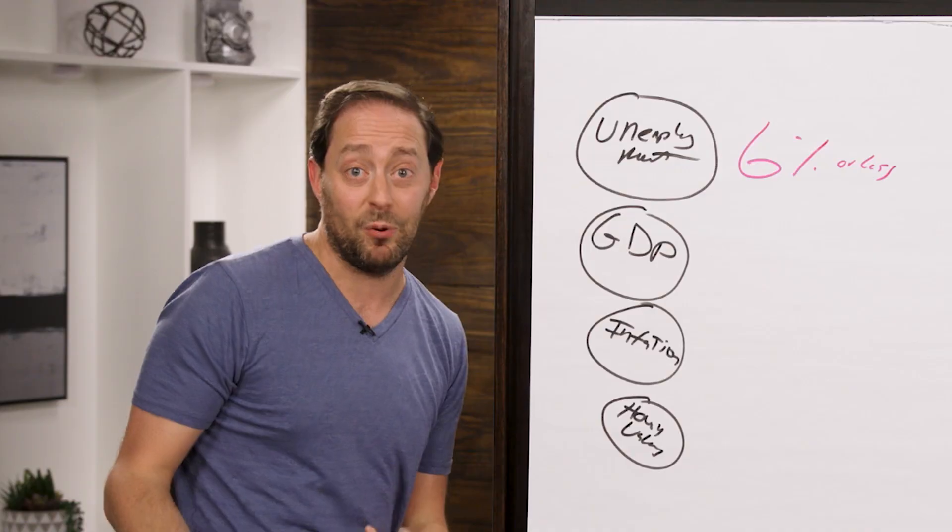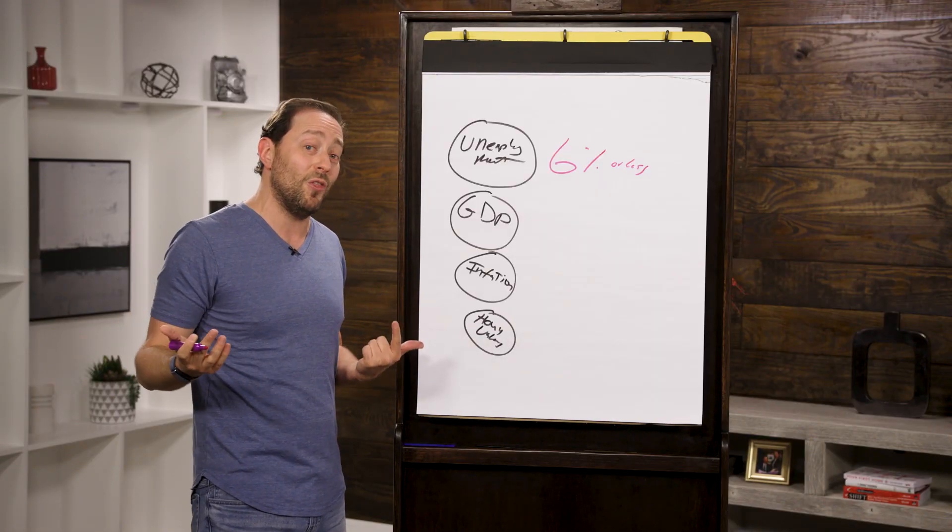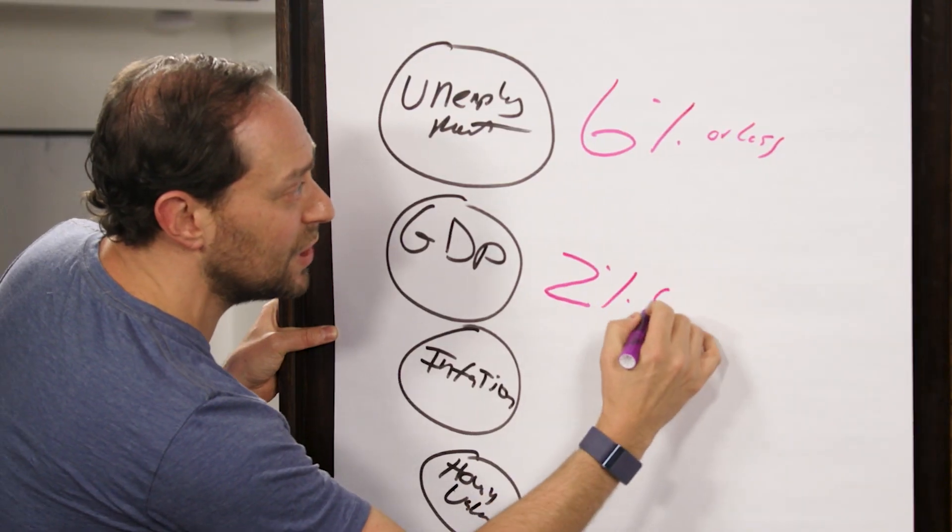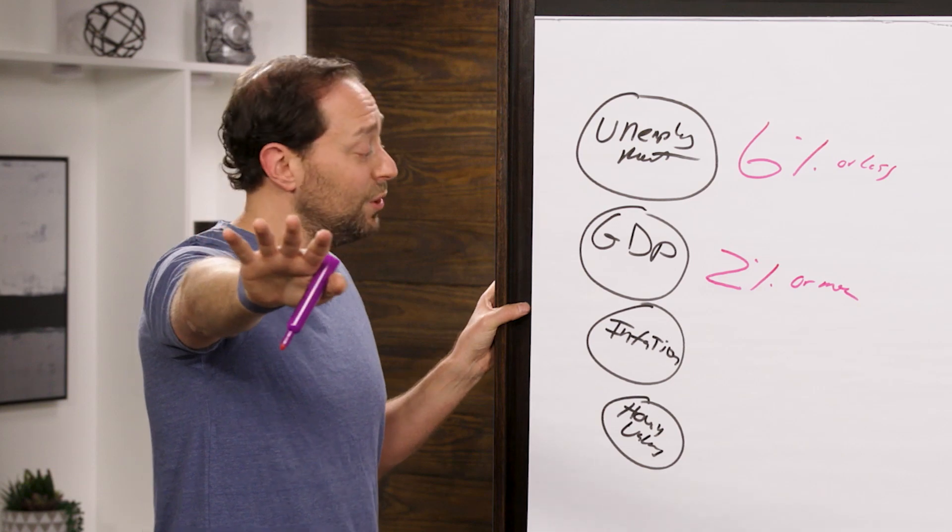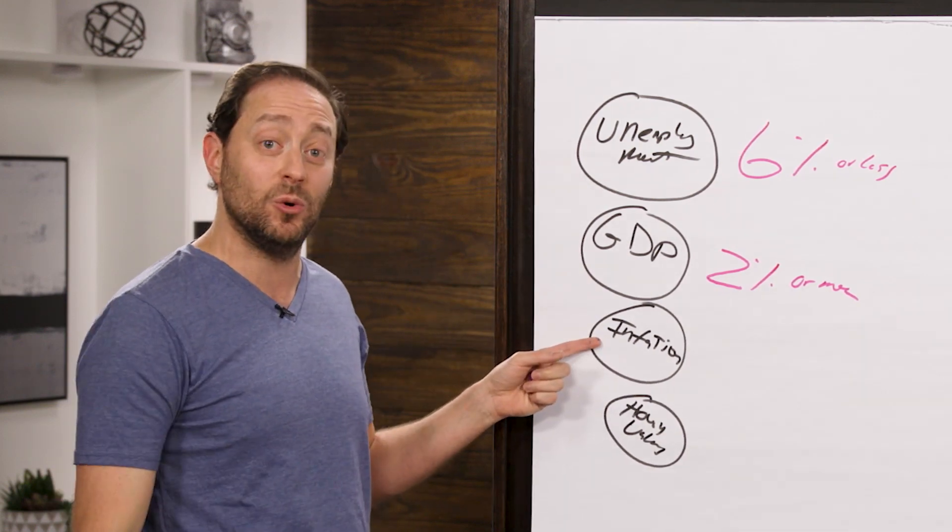GDP. I want it to be going up. Remember, when it goes down for two consecutive quarters, we got a problem. We call that thing, at least I do, a recession. I want to see GDP 2% or more. When it starts getting into 3% or 4%, we start getting hot, and I mean real hot. And that sometimes leads to inflation.